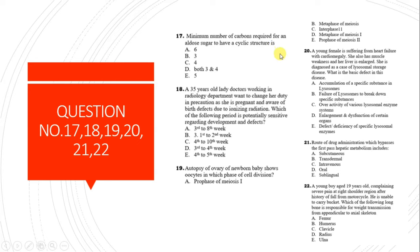Question 17: The minimum number of carbon atoms required for an aldose sugar to have a cyclic structure is three. Three is the minimum number of carbon atoms required to form a cyclic structure.